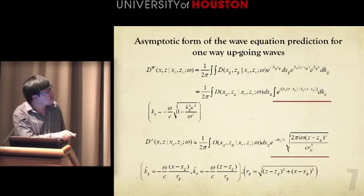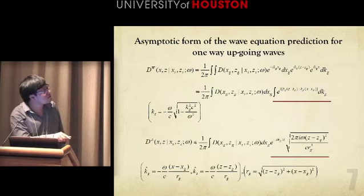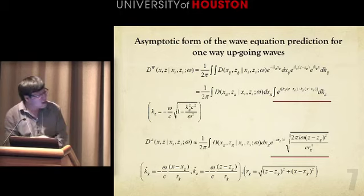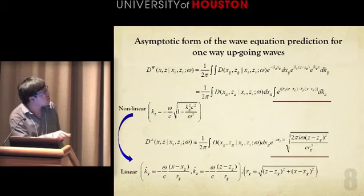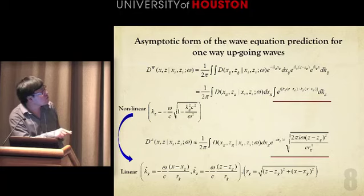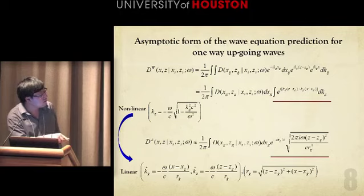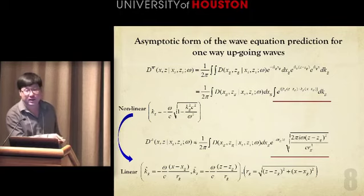And the superscript A represents the prediction from the asymptotic form, and the superscript W represents the prediction from the wave form. And by applying this asymptotic approximation, we notice that the original nonlinear relationship between k_z and omega now becomes the linear relationship between k_z and omega.